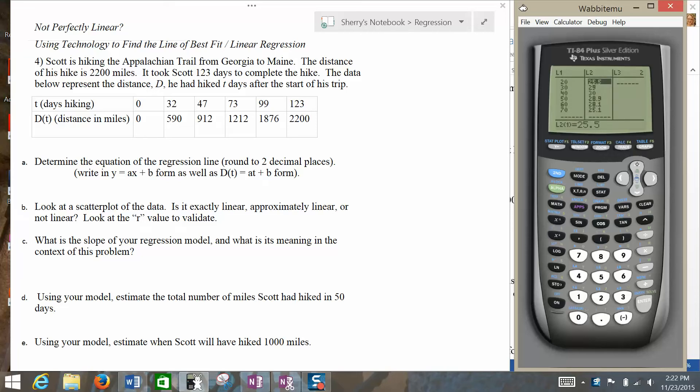First of all, you want to make sure that you have List 1 and List 2 and that you've cleared out any data that's already in there. To clear out data, use the up arrow to highlight the name of the column and then hit Clear and Enter. That will wipe out all the data in one fell swoop. Do the same thing over here. Use the arrows to highlight L1, hit Clear and Enter.